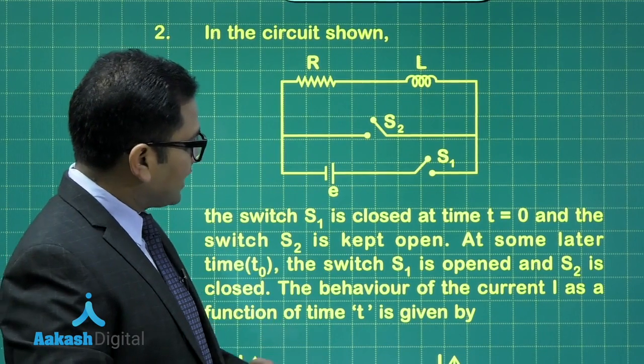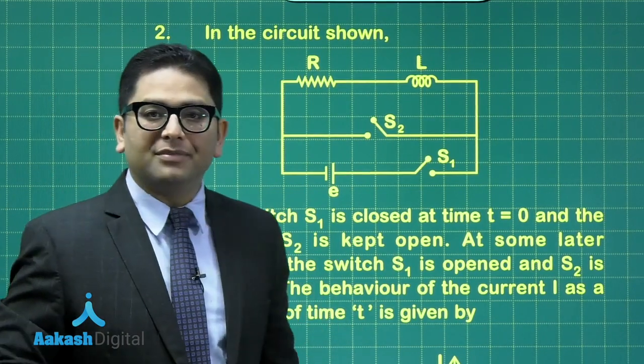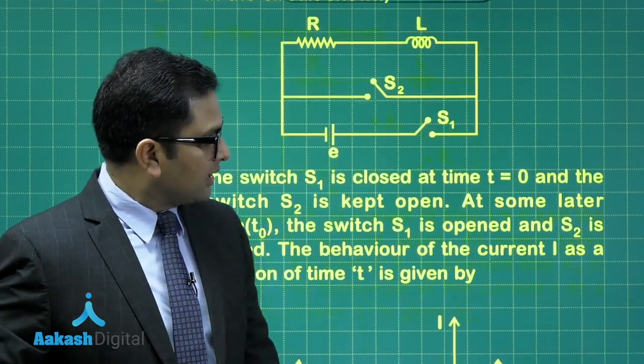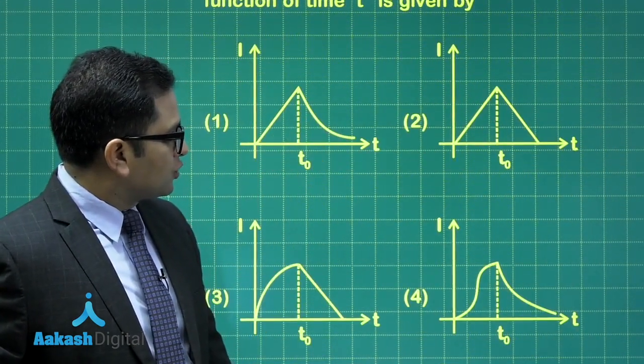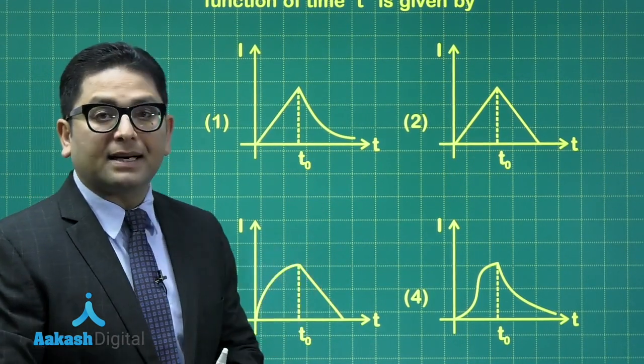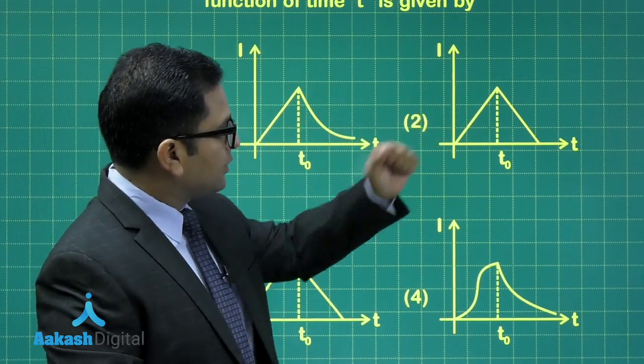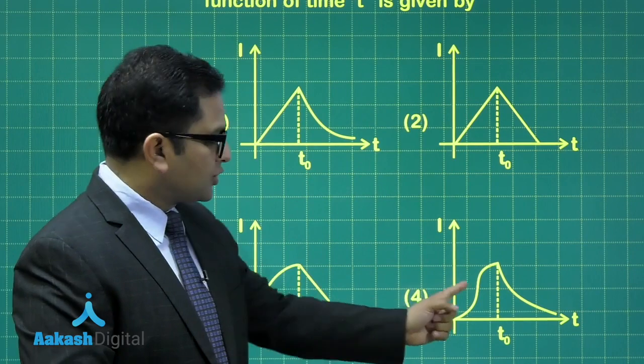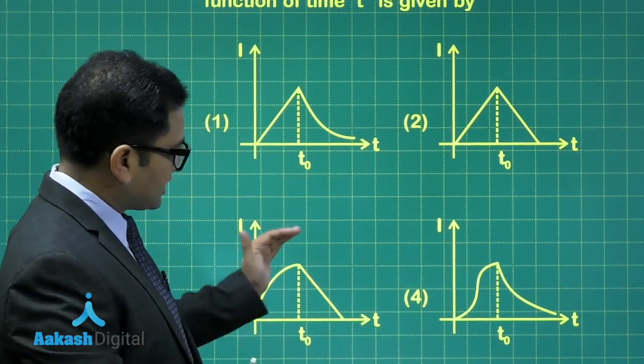And what I need to find is that the behavior of the current i as a function of time, that's what we need to calculate. So let's see. Here are the four options out of which we need to choose a correct one. And if you see, initially the current builds up exponentially with respect to time. So this would be eliminated. And out of these two, a simple RL charging circuit will have a build of this nature.